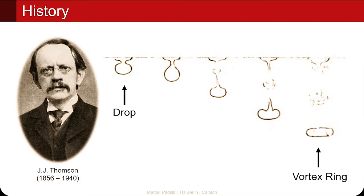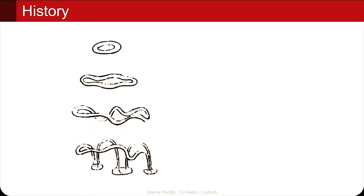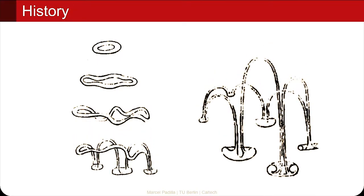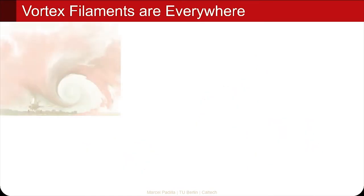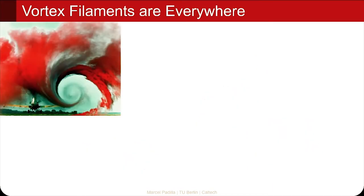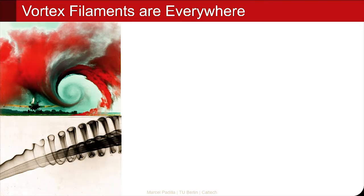This vortex ring at the bottom is really the star of the show that we want to simulate. Thomson noticed that the dynamics of these intricate shapes are related to the viscosity of the fluid. Generally, these vortex phenomena are very common in nature and are known as vortex filaments — curved shapes where vorticity is concentrated — which show up in the wakes of a plane or in smoke when it starts rolling up.